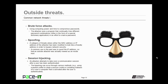Then there's spoofing — a category of threats where either the MAC address or the IP address of the attacker has been modified to look like a friendly address in order to bypass network security. A common use in the past was for an attacker to spoof their IP address so that the outside attacker was actually viewed as an inside host. A common defense against this type of spoofing is an ACL rule that doesn't allow an inside IP address to come from outside of your network.